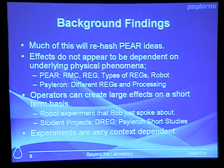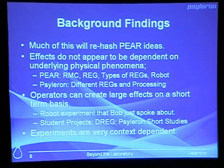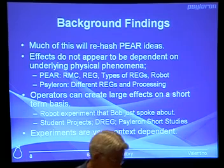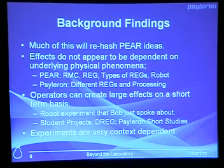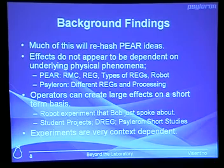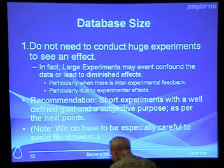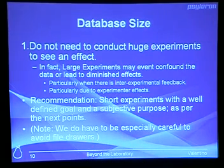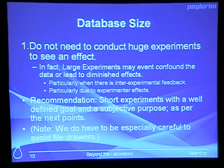Some background PEAR findings: effects do not appear to be dependent on the underlying physical phenomena. At PEAR you have the random mechanical cascade, REGs, robots — different types — and they all seem to produce results with similar structure. I would suggest that if anyone is going to conduct experiments, you conduct short, well-controlled experiments with a very clear, well-defined purpose. You don't need to generate two million trials to come up with a conclusion — in fact, that may be counterproductive.